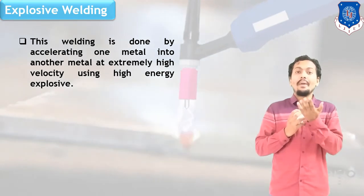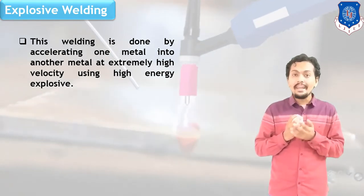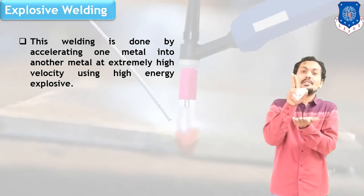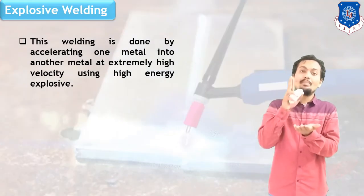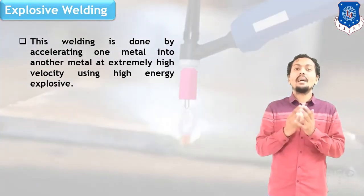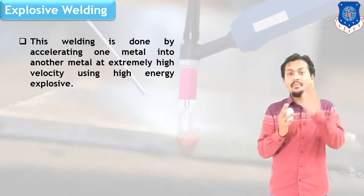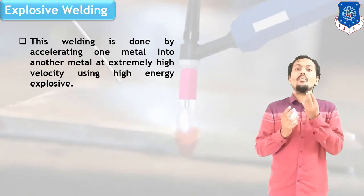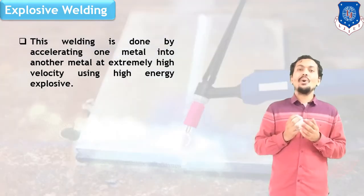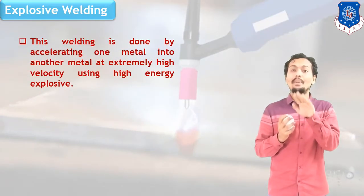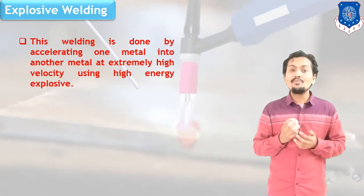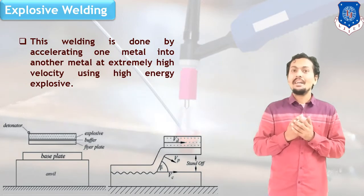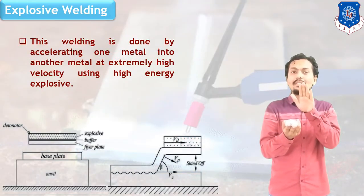Let us start our discussion in depth for Explosive Welding. For example, we want to do welding between two plates. One plate remains stationary and another plate is striking on the base plate with high velocity. With the help of this high velocity striking, heat is generated, and with help of this heat we can weld two plates together. Here I mentioned one image or principle figure for Explosive Welding — there is one base plate on which another plate, known as the flyer plate, is placed.